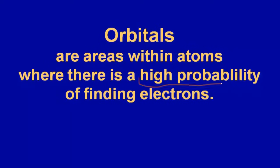High probability is the operative idea here. We don't know where electrons are going to be all of the time, but we know where they're going to be 90% of the time. That's what's meant by probability. These orbitals are probability clouds.